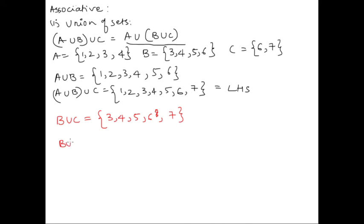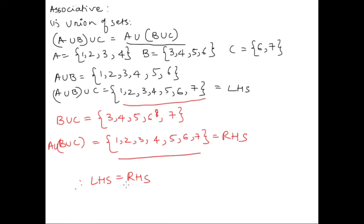Now let's do B union C but with A union. That means first we list out A which is 1, 2, 3, 4, and then we list out B union C without repeating. That's the key: 5, 6, 7, which is RHS. Now if you compare these two they are the same. So LHS is equal to RHS, which proves that union of sets follows the associative property.